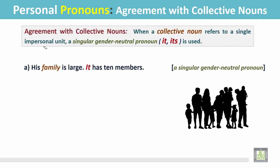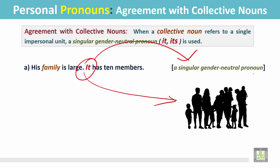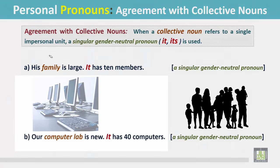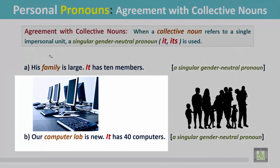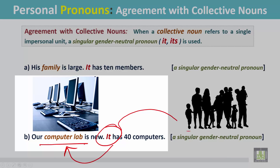Example A: His family is large. It has ten members. Here, 'it' is a singular gender-neutral pronoun which refers to 'family.' Example B: Our computer lab is new. It has 40 computers. In the second sentence, 'it' is a singular gender-neutral pronoun which refers to 'computer lab.'